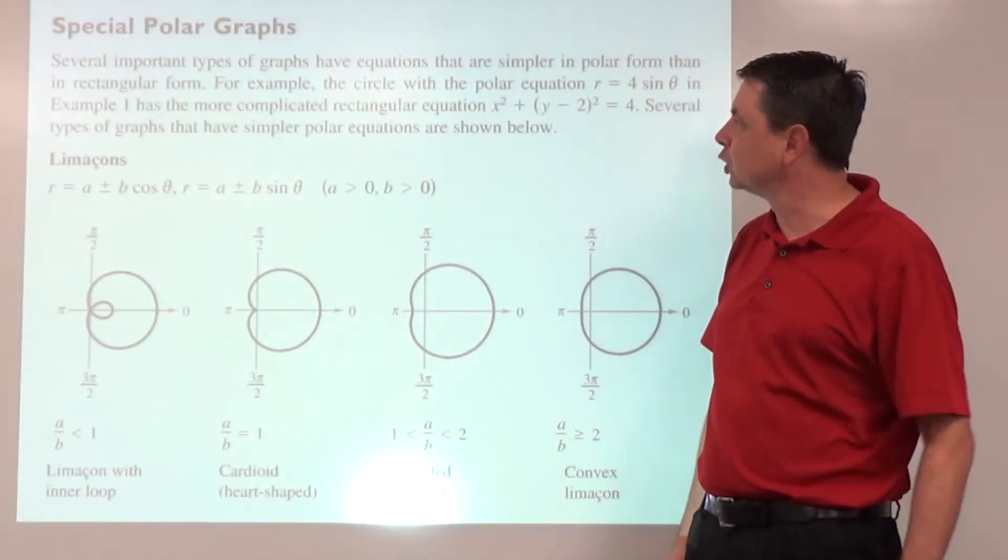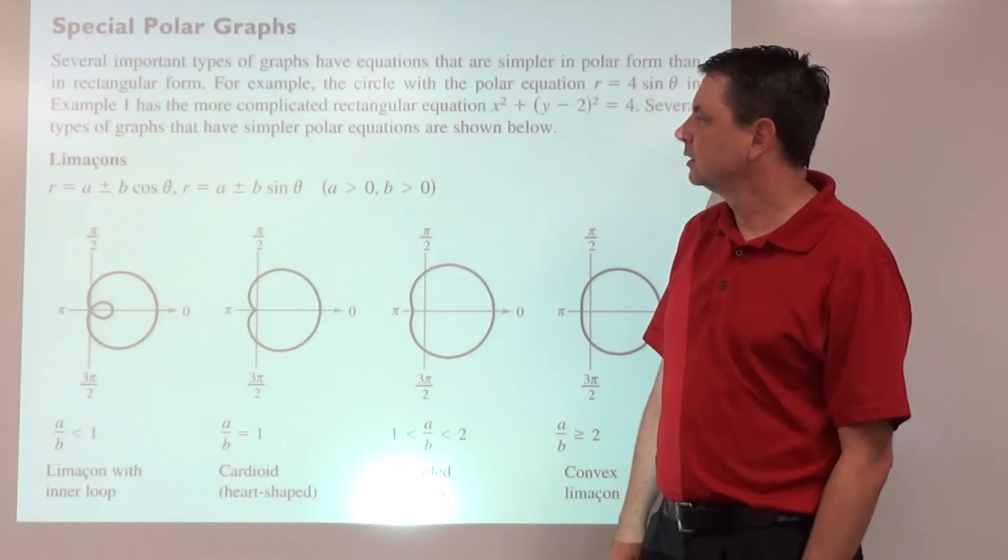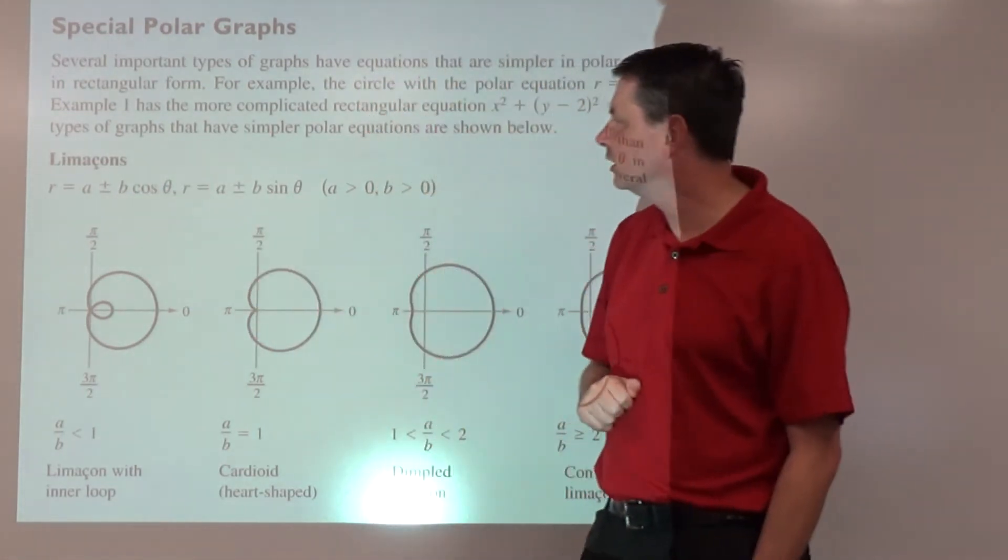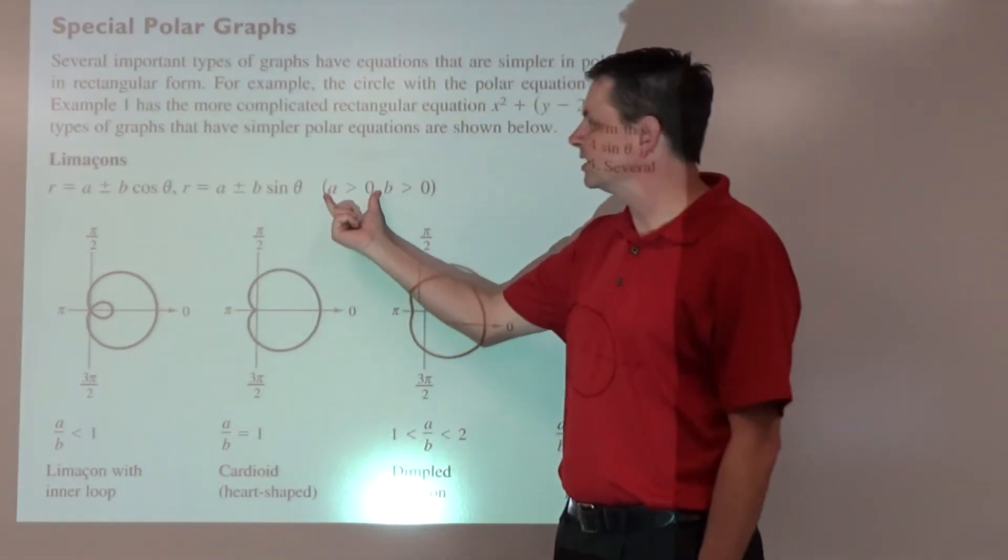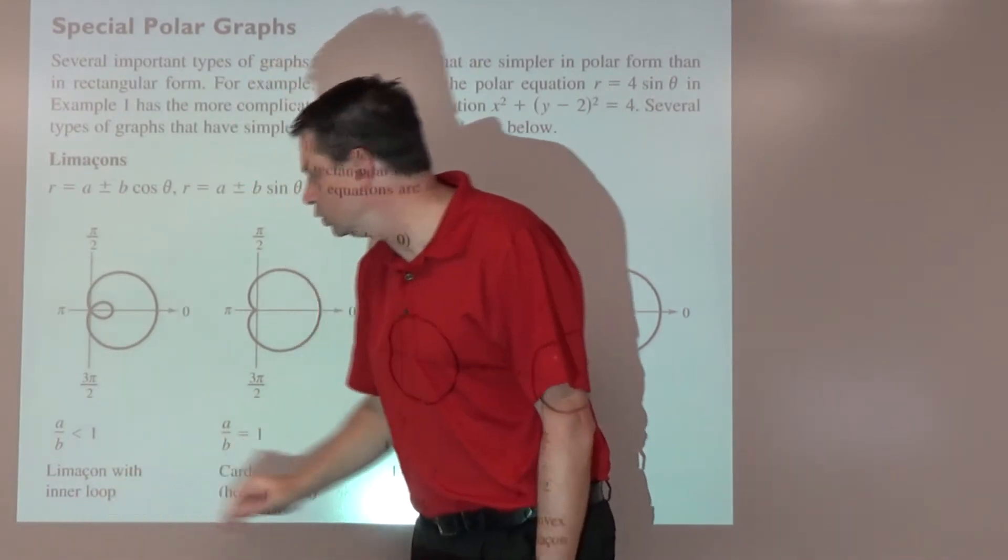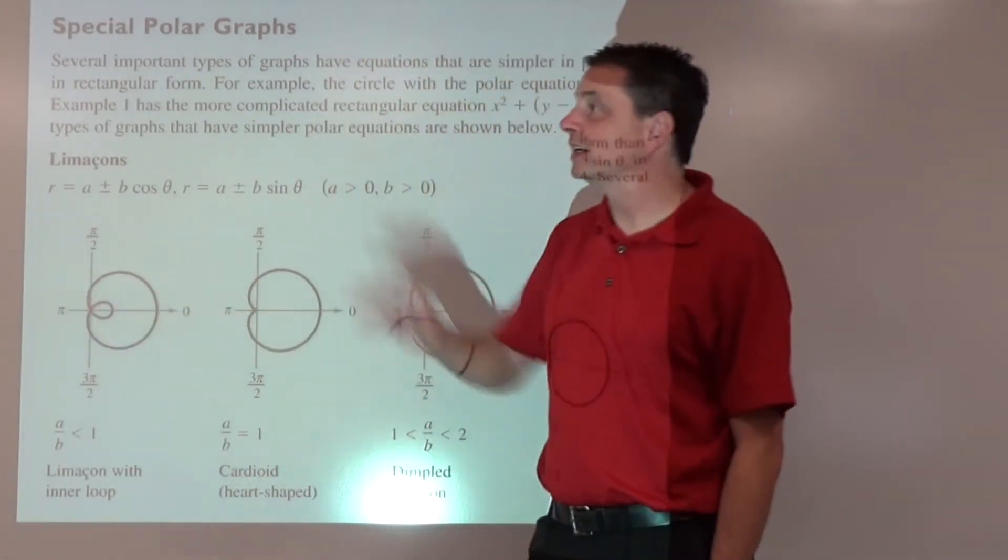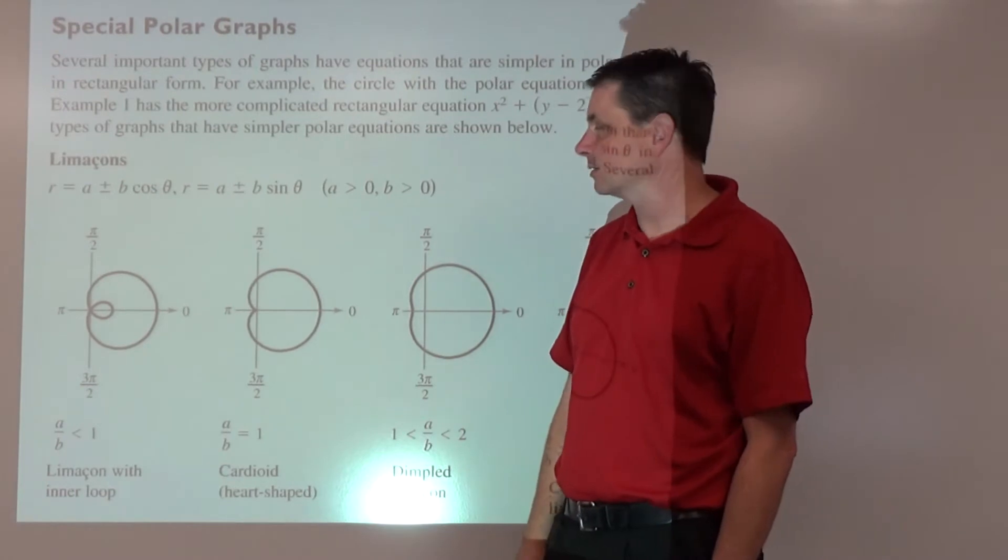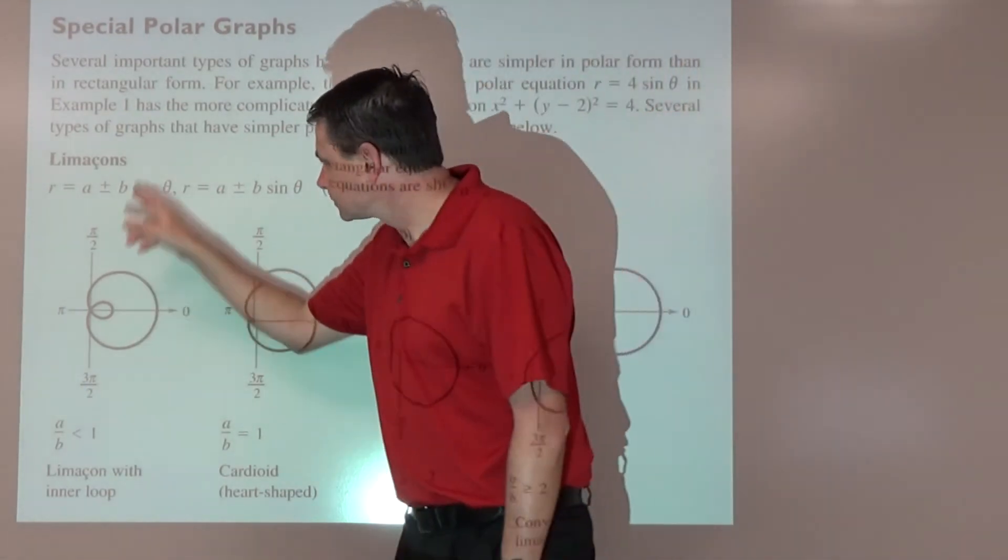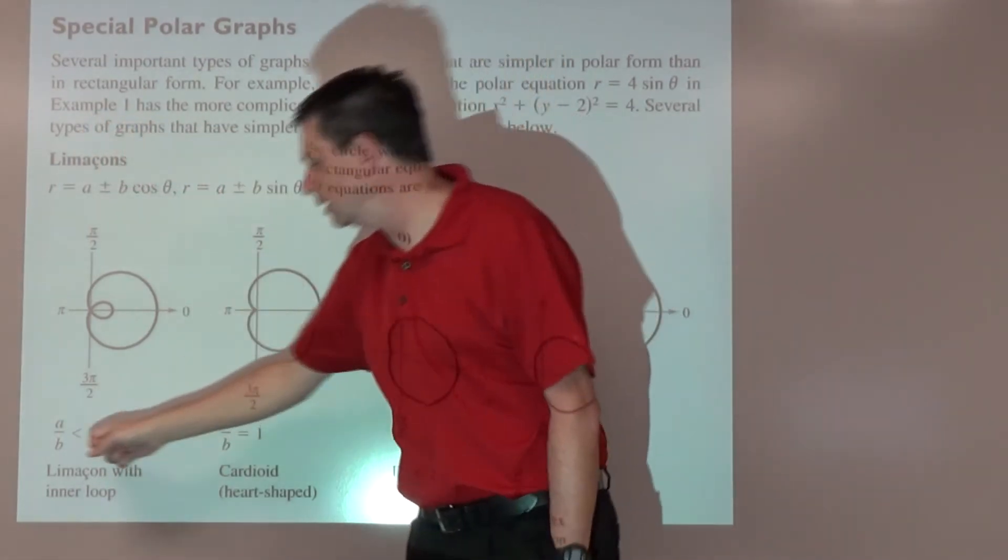Some special polar graphs to look at. We're going to start with limaçons. If it is r equals a plus or minus b times cosine theta or sine theta, as long as we consider a and b to be positive numbers, you can get a limaçon. This looks like a limaçon with an inner loop. It's what happens when your a is less than b. If a is less than b, so let's say we have 3 plus 5 cosine theta, 3 over 5 is less than 1.